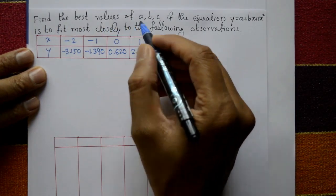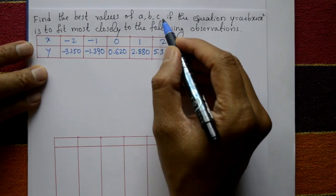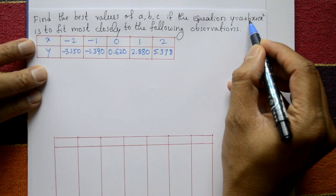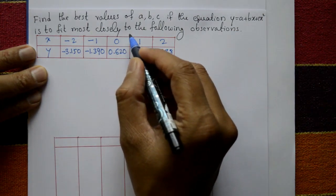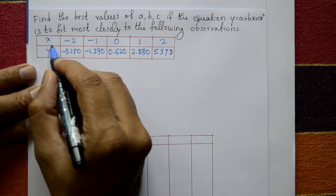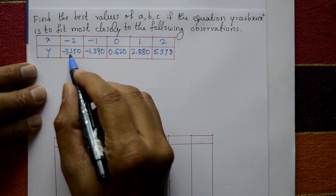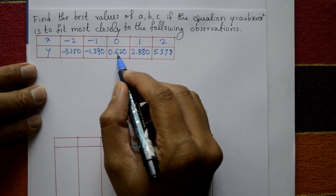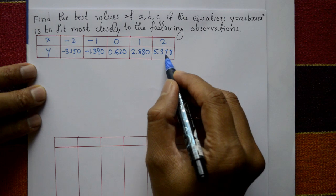Find the least squares values of parameters a, b, c if the equation y = a + bx + cx² is to fit most closely to the following observations: x values are -2, -1, 0, 1, 2 and y values are -3.150, -1.390, 0.620, 2.880, 5.378.